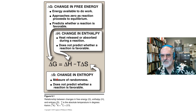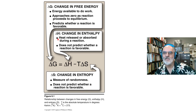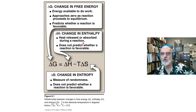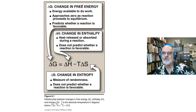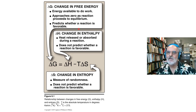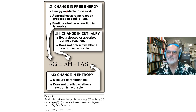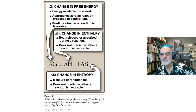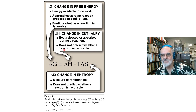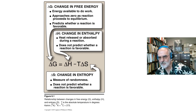The change in entropy is a measure of randomness, but it alone does not predict whether a reaction is spontaneous. The enthalpy is a measure of heat released or absorbed, and again, it alone does not predict spontaneity. It's only delta G that predicts the spontaneity of the reaction. It tells you something about the available energy for doing work and approaches zero as the reaction proceeds to equilibrium.